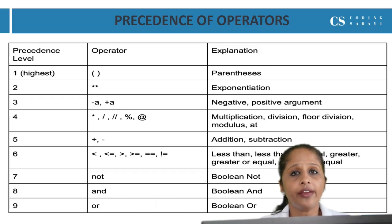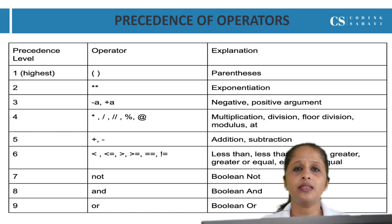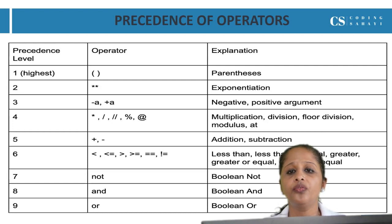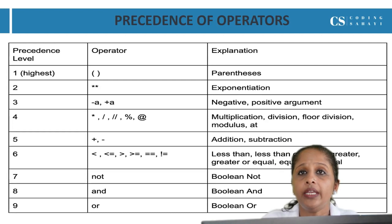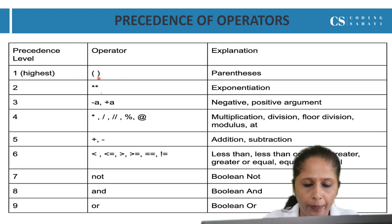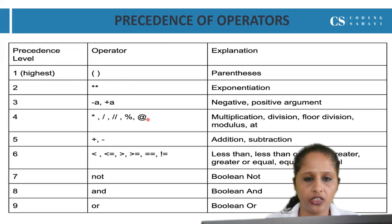In this video, we are going to solve some output-based questions. Already we discussed the precedence of operators in one of the previous videos. For doing output questions and solving expressions, we have to be thorough with the precedence of operators and its associativity. The highest priority is for parenthesis and the lowest priority is for boolean-or. Please go through this table — it is important for solving the expressions.